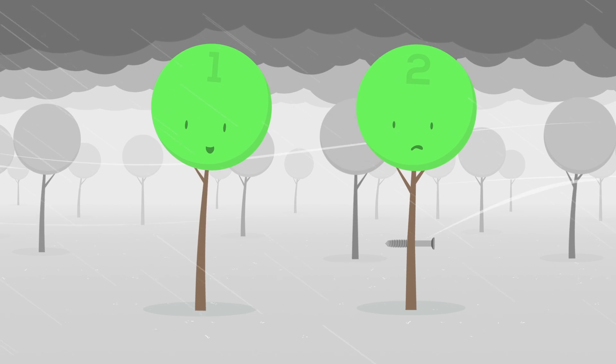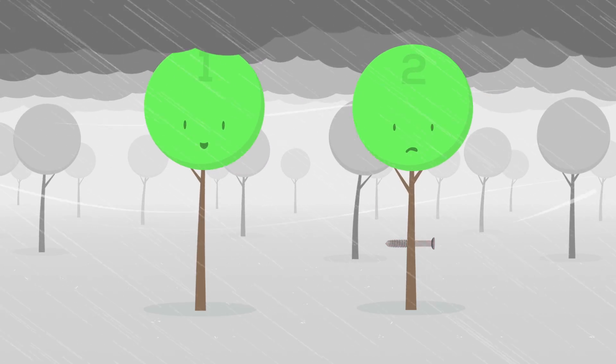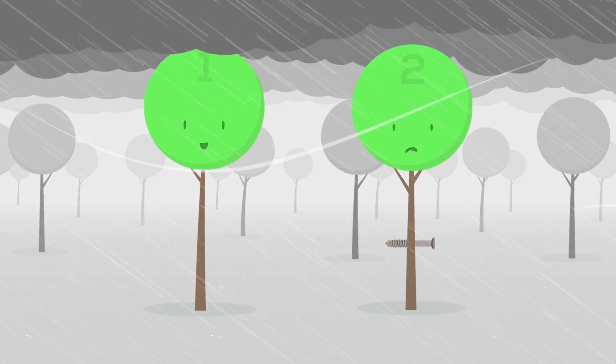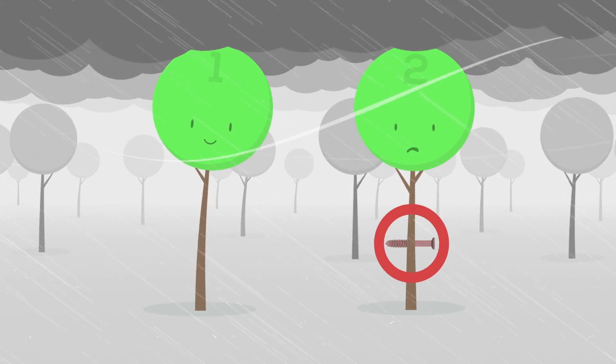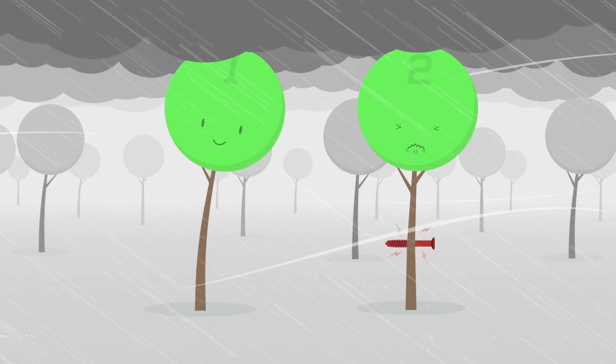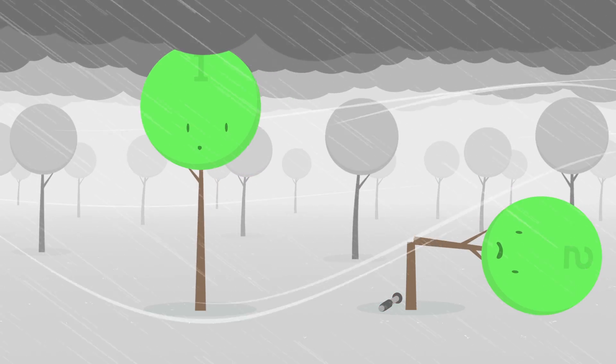Notice how when exposed to extreme weather conditions, these two trees react very differently. Tree number one is bending without stress because of the trunk's natural ability to flex and bend. This actually makes it much stronger. The foreign object in tree number two is absolutely preventing this adaptation, which is why it was quick to break.